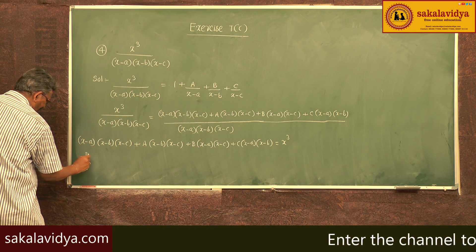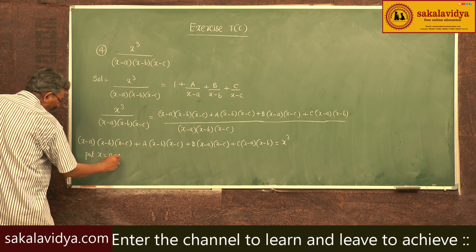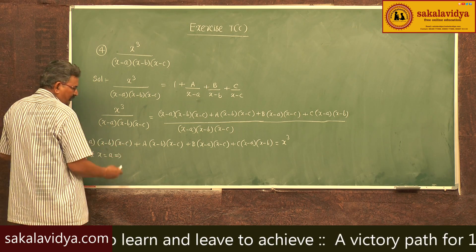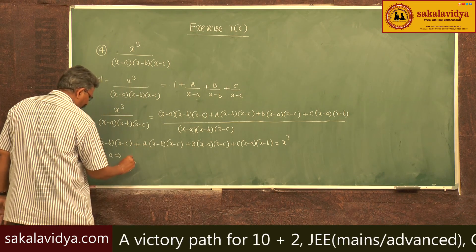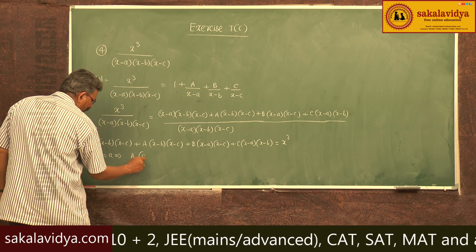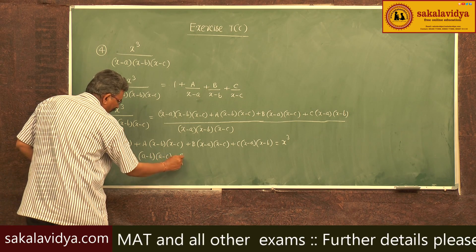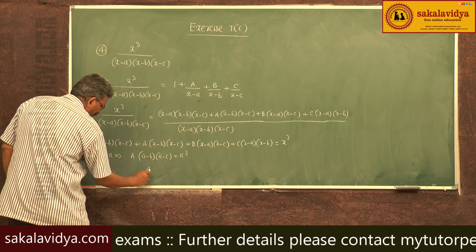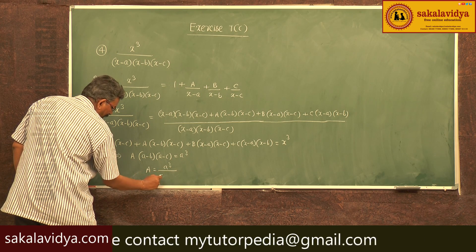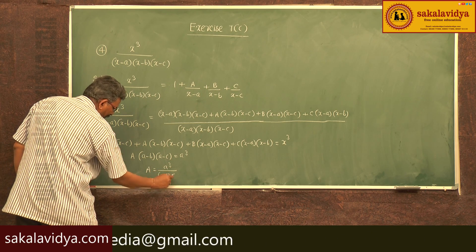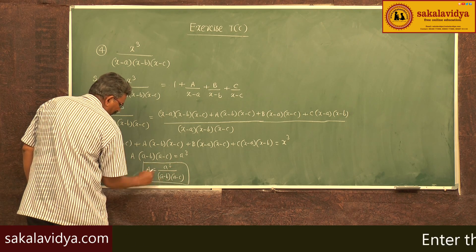Put x equal to a. The first term and last two terms become 0. So A times (a minus b)(a minus c) equals a cube. Therefore A equals a cube by (a minus b)(a minus c).